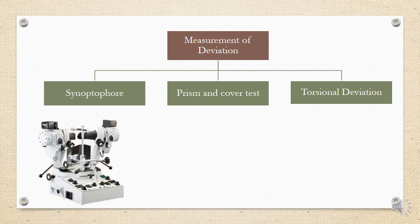The synoptophore gives all three axes of deviation — horizontal, vertical, and torsional. The patient looks through two eyepieces with refractive correction and SMP or fusion slides are placed. The patient indicates whether they see two images or one, and moves the handle until the images become single. The eyepiece can also be moved vertically and torsionally using knobs, allowing alignment and measurement of deviation from the scales.